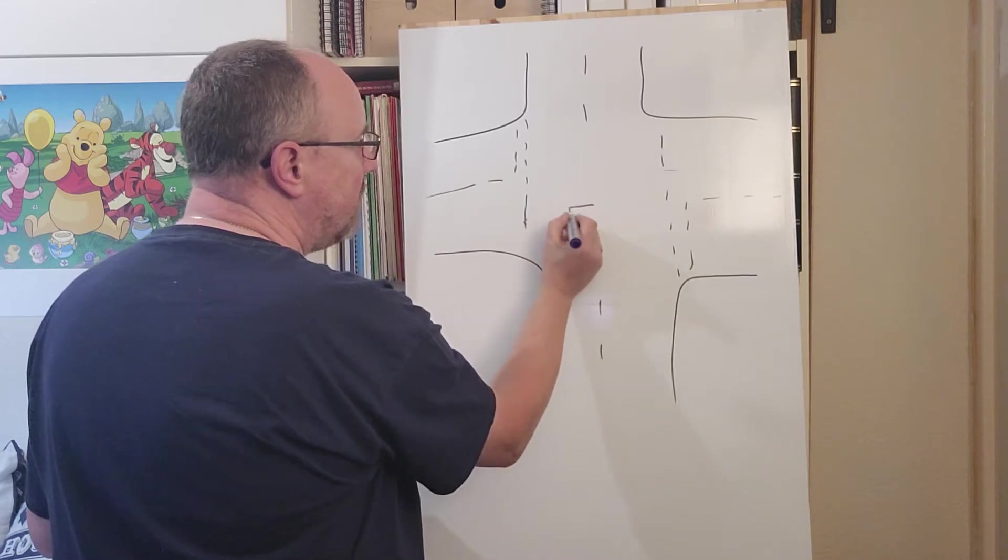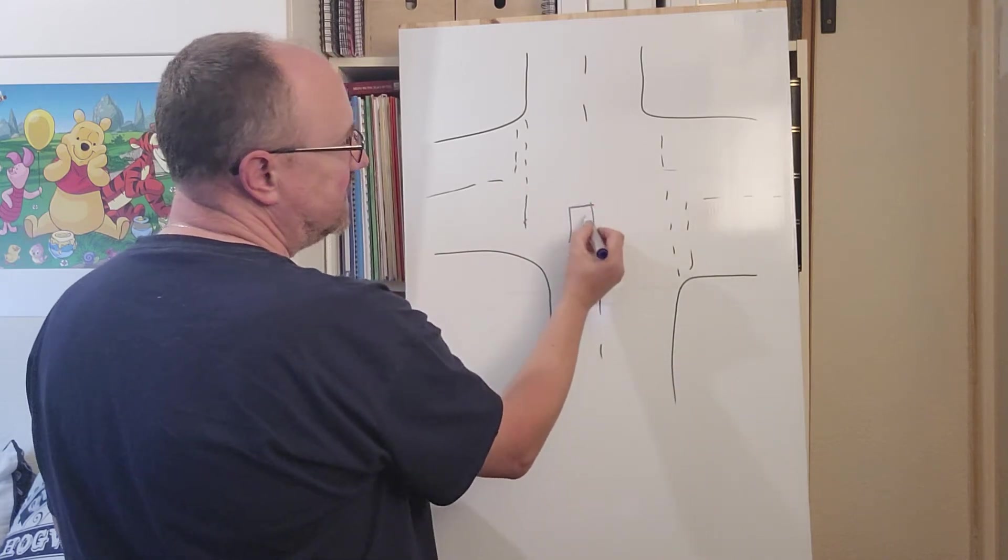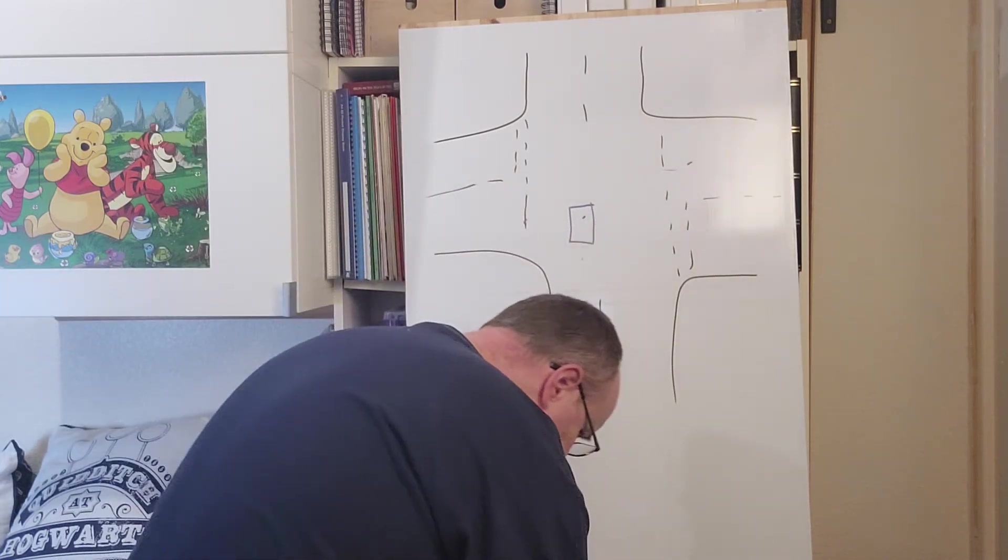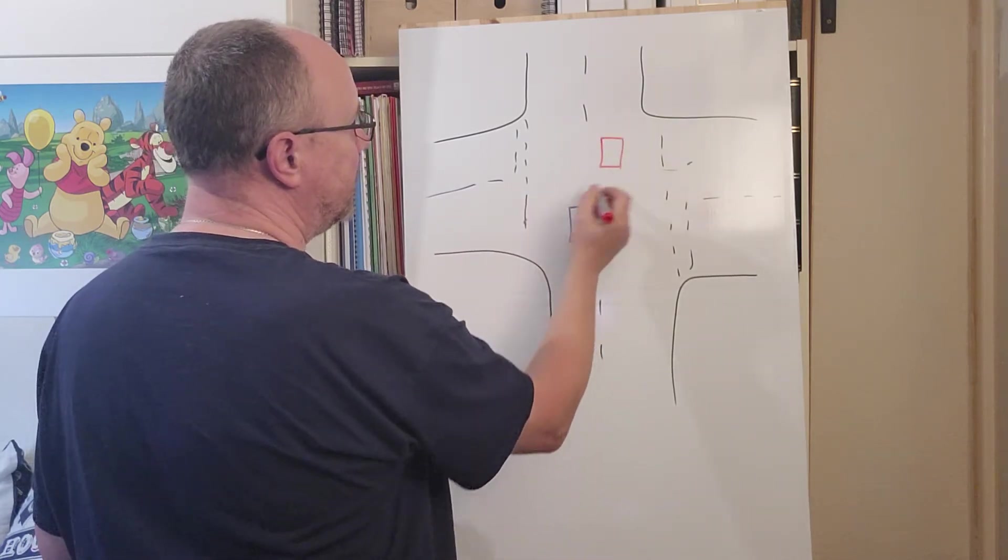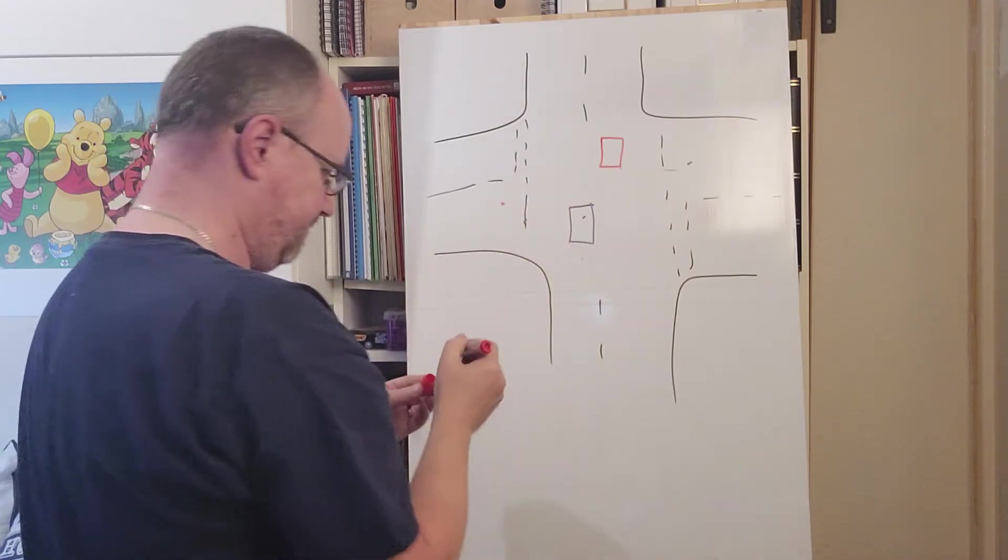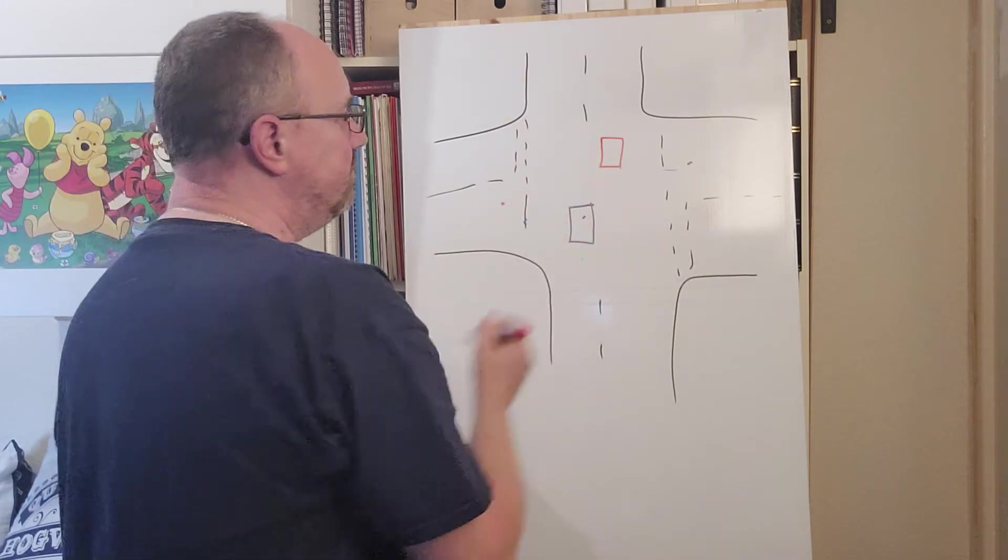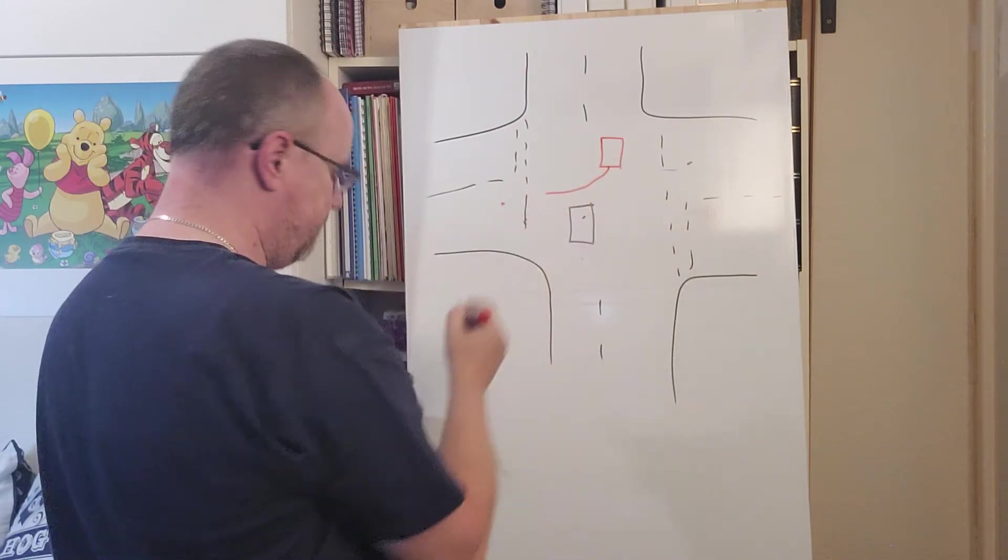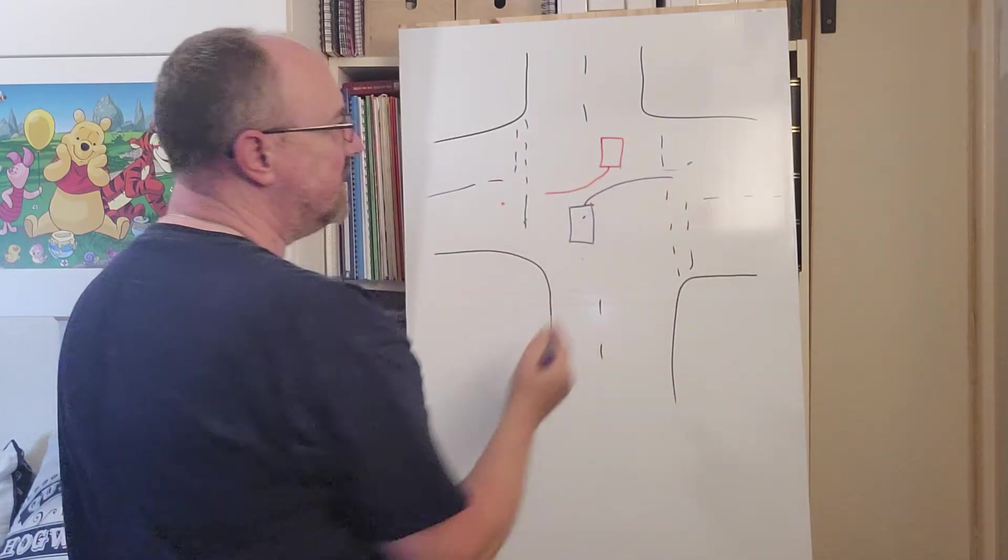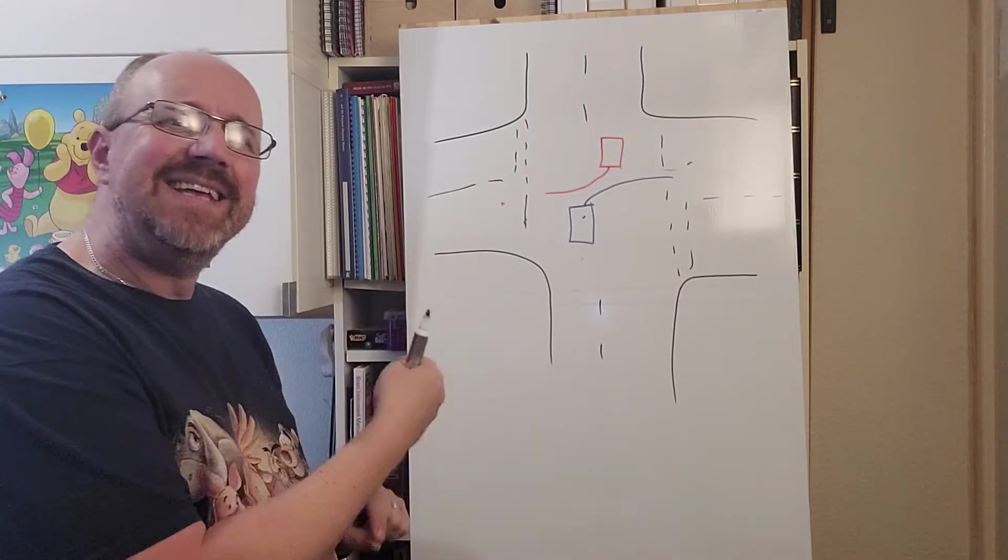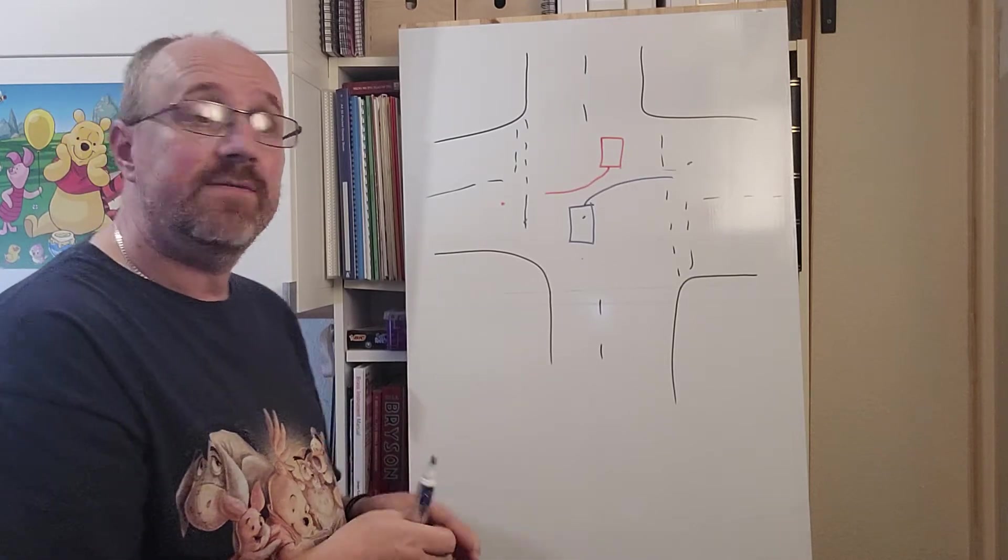So we've got one car waiting there to go into this road. Let's use a different color for the other car. We've got another car waiting there to go into this road. Now in this position, the red car is going to go there, the blue car is going to go there. Can you see that you're not getting in each other's way when you move? So theoretically, you could both move at the same time.